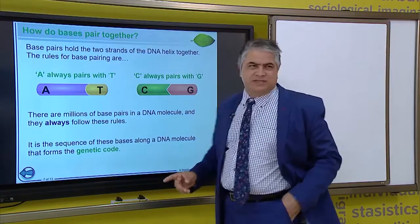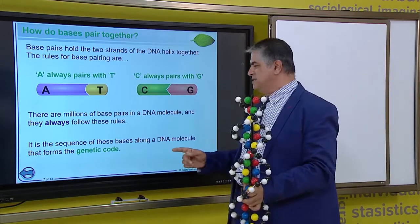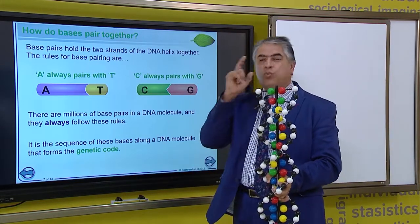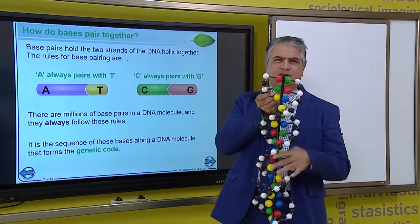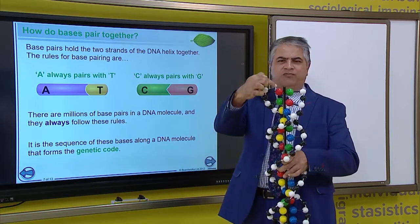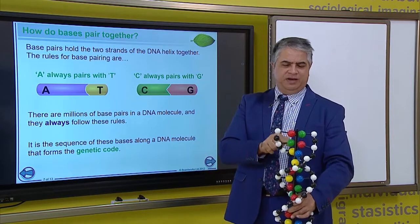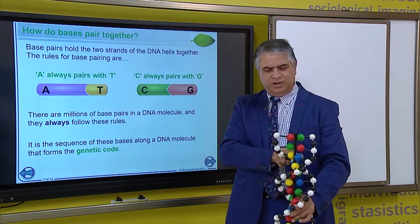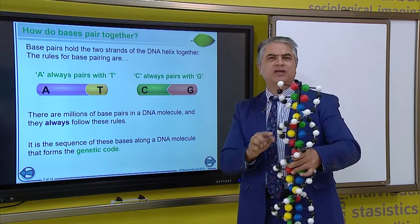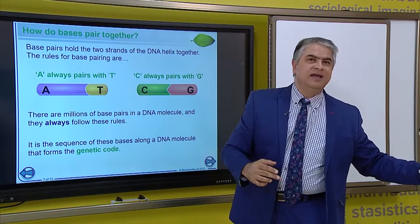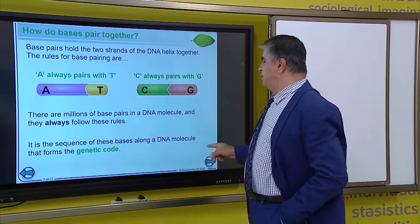Now, the sequence, the sequence of these base pairs is what holds the genetic code. As you can see, the sequence starts red, green, yellow, blue. And it moves on to yellow, red, yellow. So, that sequence has the genetic code for that molecule.